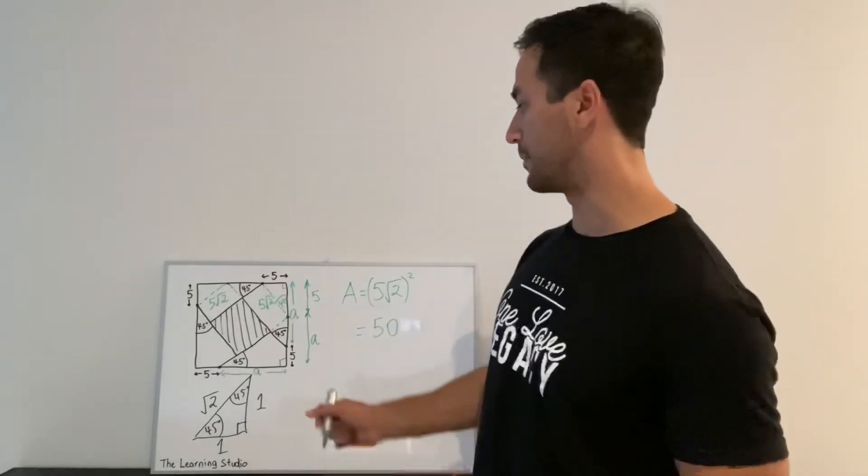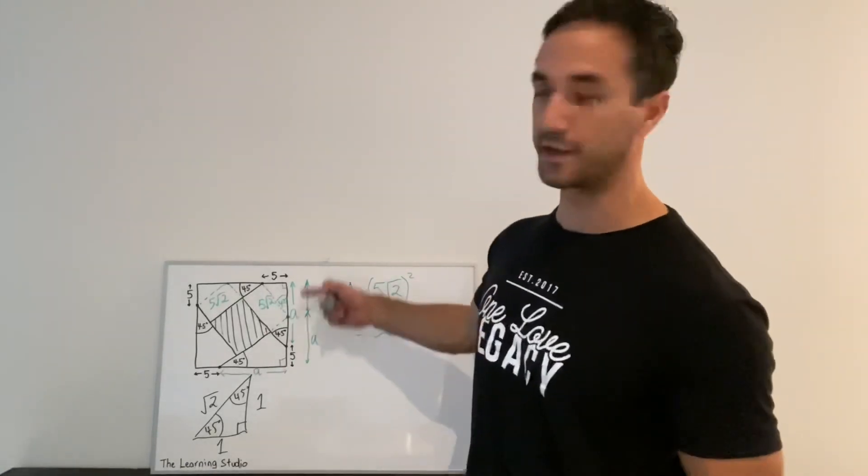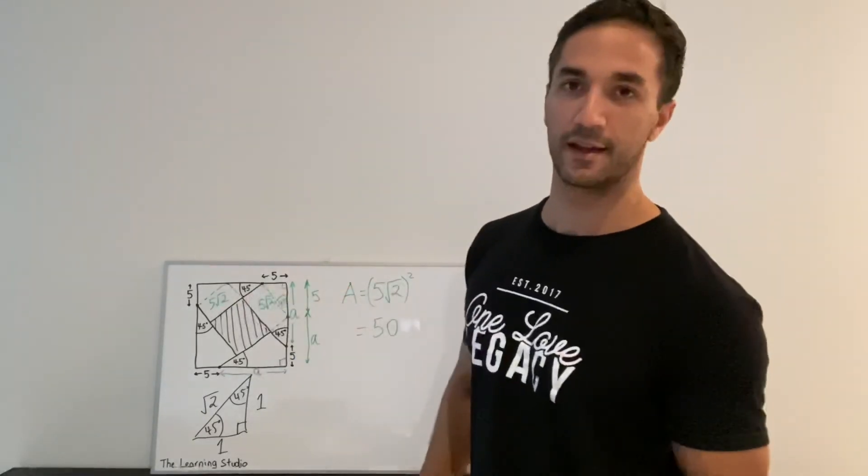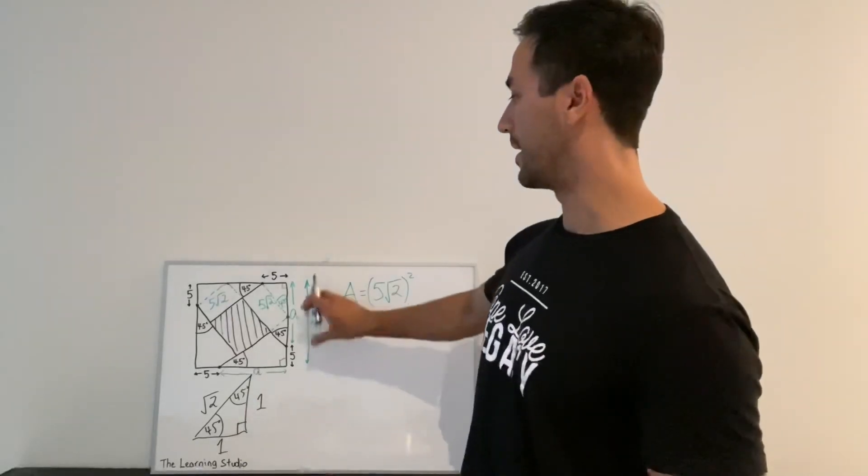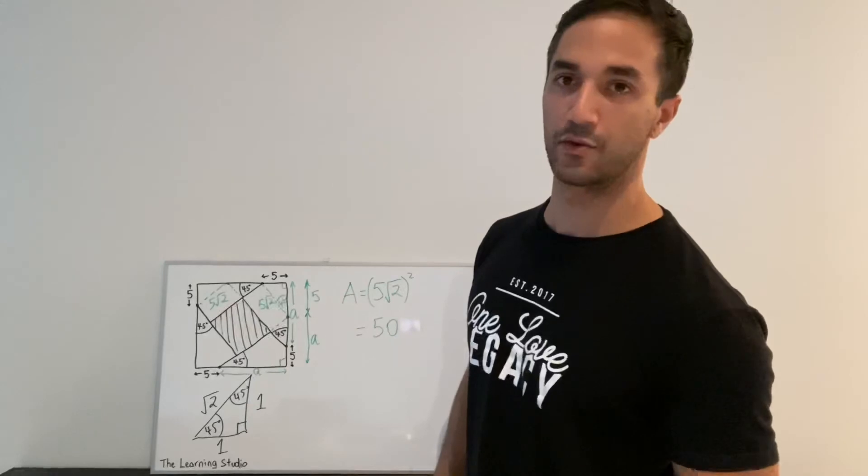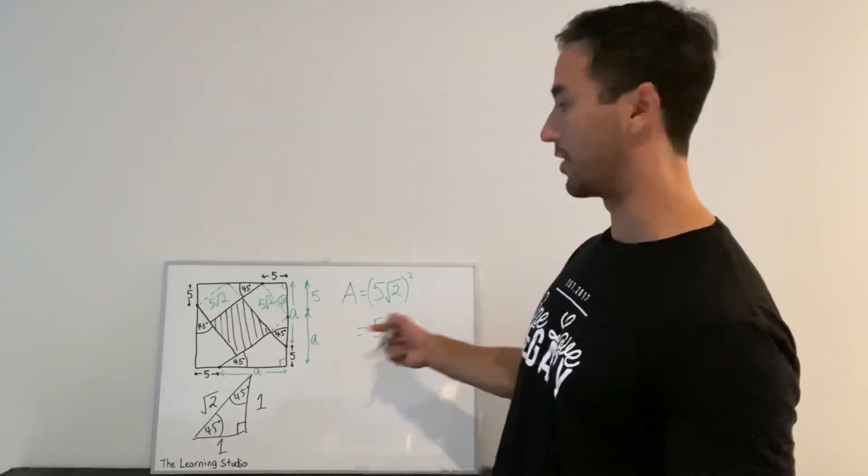So that might be somewhat surprising. What we've actually shown is that no matter what this length a is, as long as you still get an interior square, you can adjust that however you like, that little square in the middle is still going to have an area of 50.